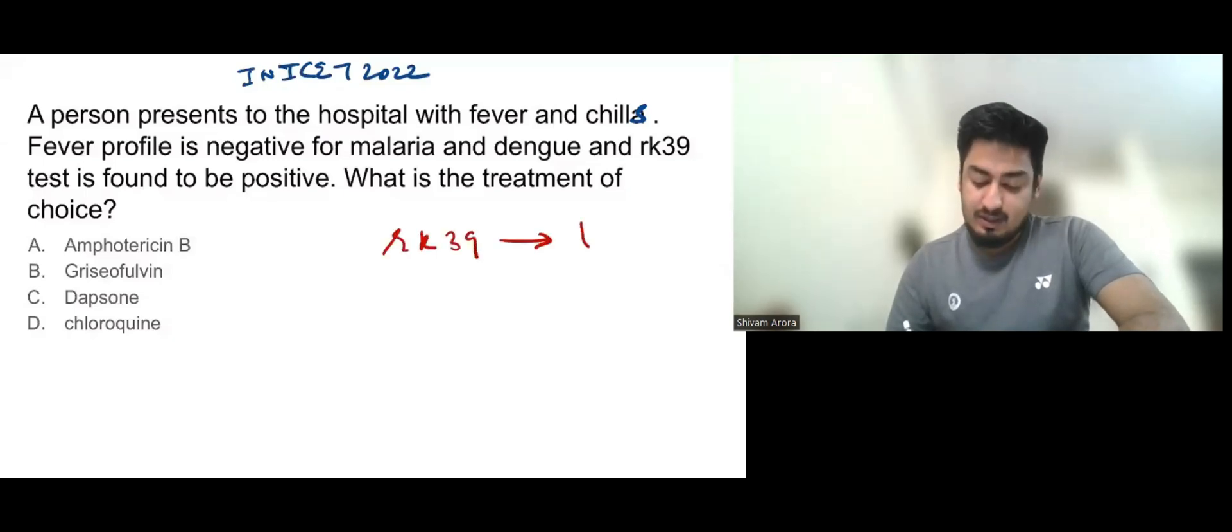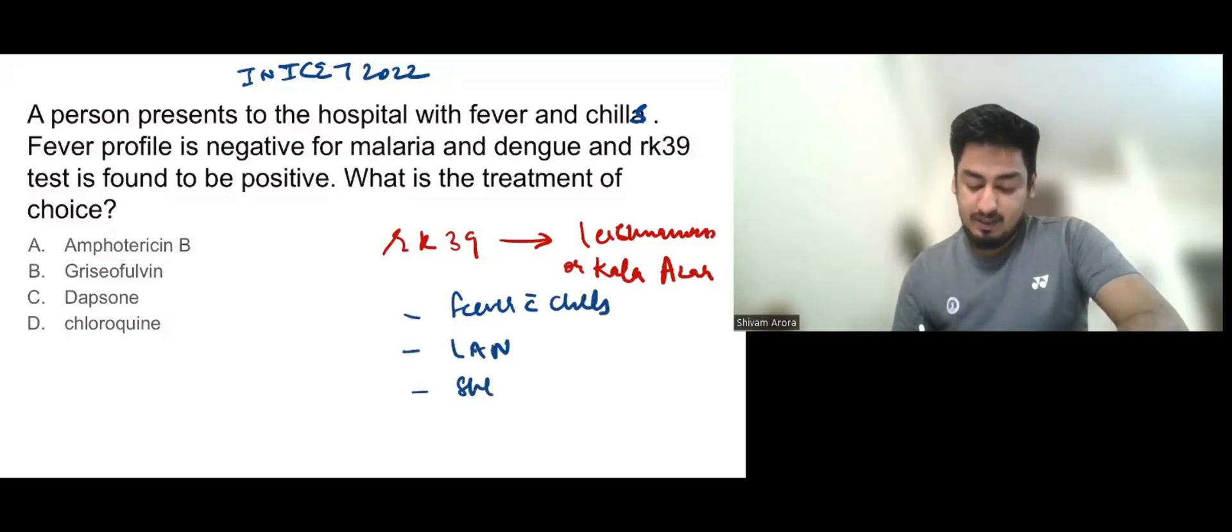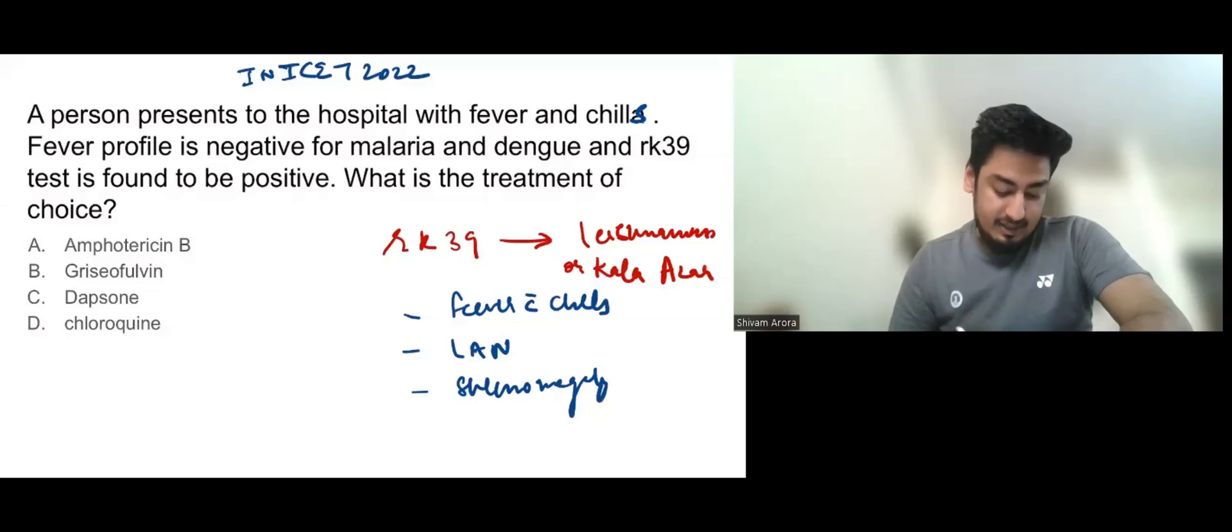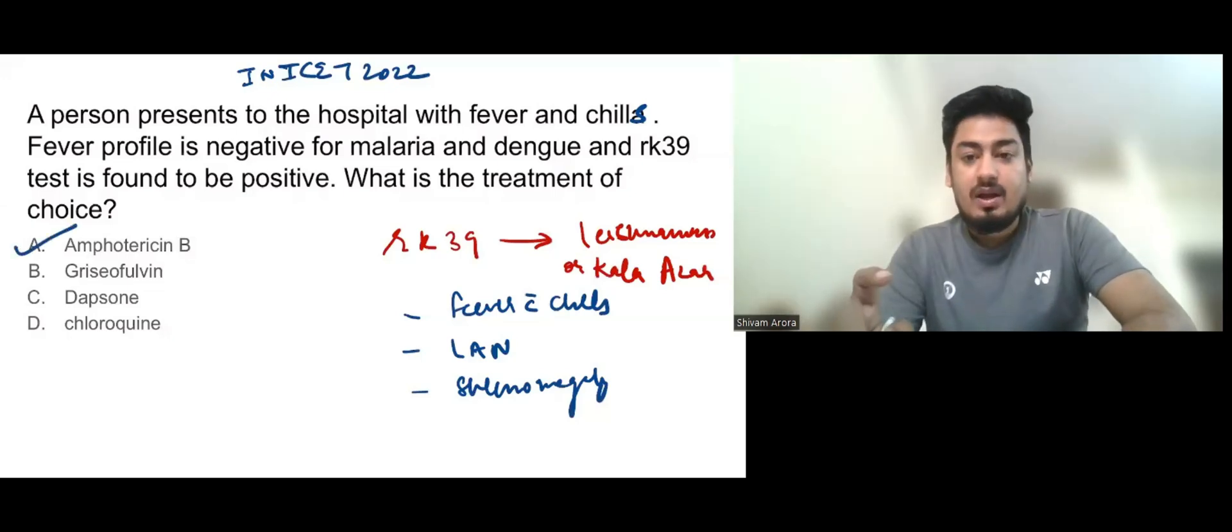What are the symptoms of Kala-azar? Fever with chills, lymphadenopathy, and splenomegaly. In chronic Kala-azar patients, massive splenomegaly can be seen. Now, what is the drug of choice for visceral leishmaniasis or Kala-azar? It is Amphotericin B. You will have to tell me in the comment section what is the mechanism of action of Amphotericin B.